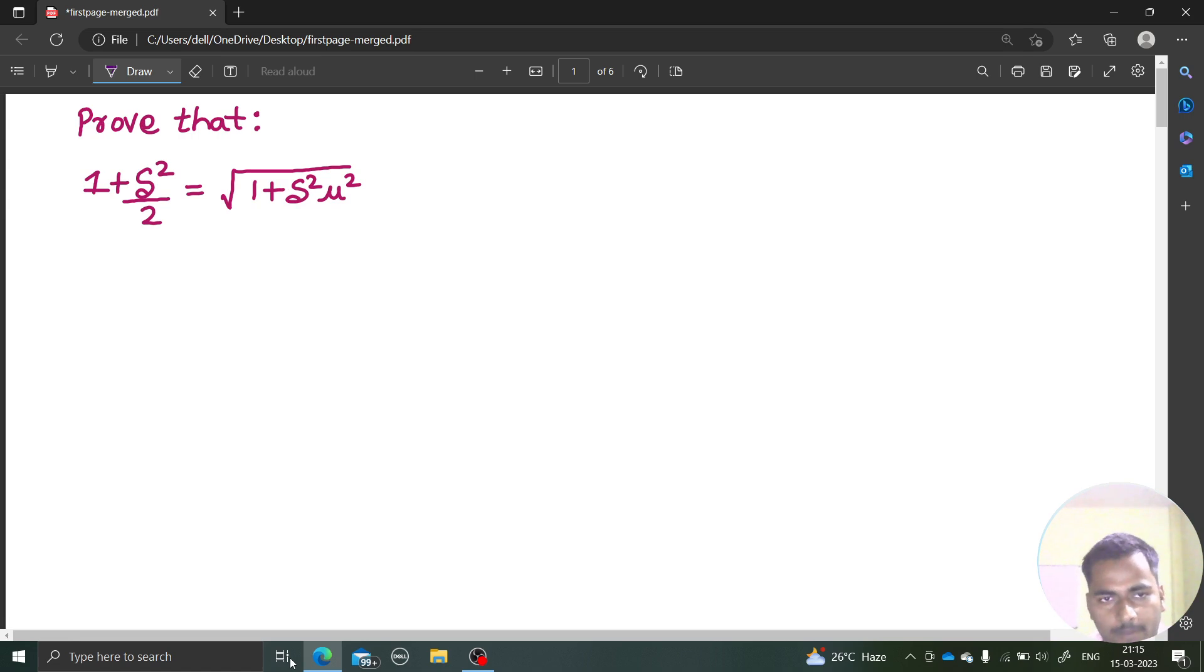Let's solve one more problem from relation between operators. We have to prove that 1 plus delta square by 2 equals to under root 1 plus delta square mu square.